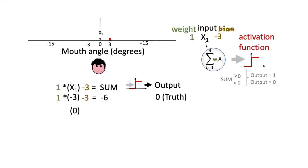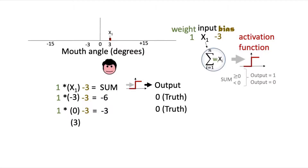When the smile angle is 0, the sum is 1 times 0 minus 3, which equals negative 3. Since the sum is less than 0, passing through the activation function gives a 0, so Sam is still telling the truth. When the smile angle is equal to 3, we get 1 times 3 minus 3, which equals 0. This is exactly at the threshold where the activation function output becomes 1, since the sum is now greater than or equal to 0. So the model tells us Sam is starting to bluff when his smile angle equals 3.